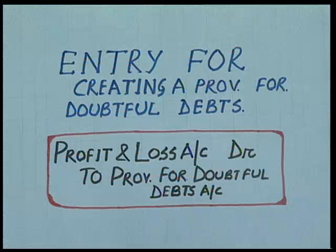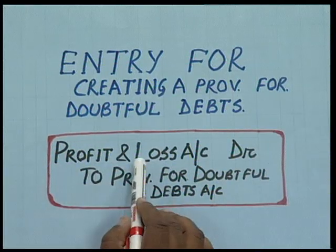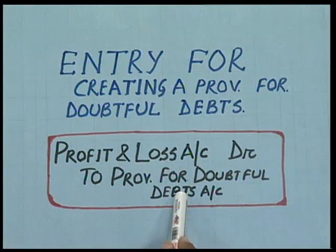For doubtful debts, some percentage of the amount may be recovered and some may not. For the amount not expected to be recovered, we have to make a provision. Since the provision is a charge against profit, the journal entry for creating a provision for doubtful debts is: Profit and Loss Account Dr. to Provision for Doubtful Debts. This amount is debited in the profit and loss account before arriving at the net profit.